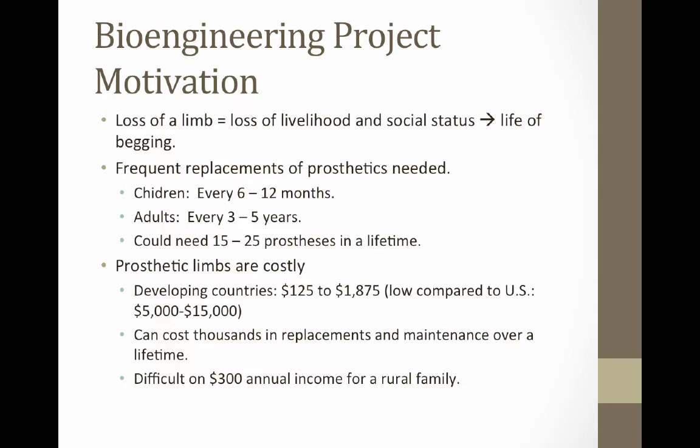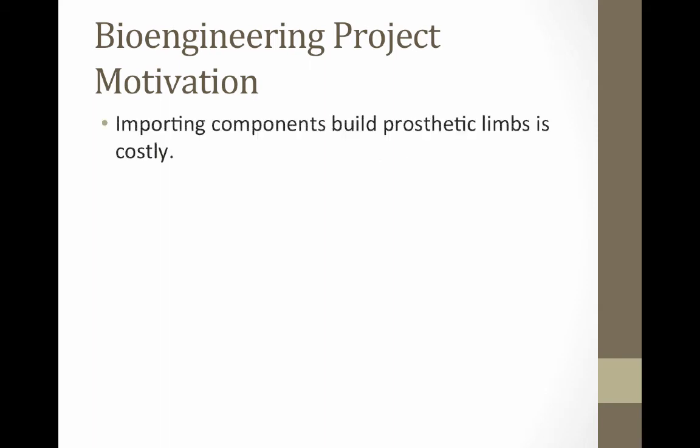Depending on when the prosthetic is first needed, a person could need anywhere between 15 and 25 prostheses in a lifetime. Prosthetic limbs in developing countries cost from $125 to about $1,800 — pretty low compared to the US cost of $5,000 to $15,000. But given how many prostheses are needed over a lifetime, this can add up to thousands of dollars, which is really difficult on an average $300 annual income for a rural family in a developing country.